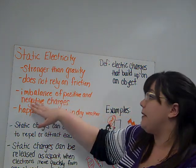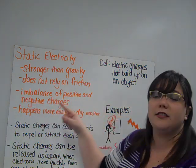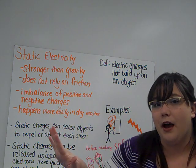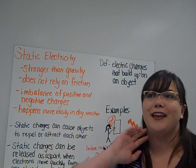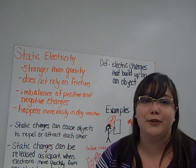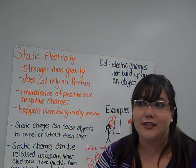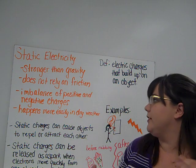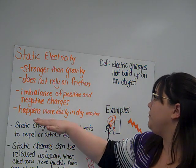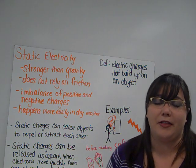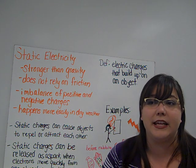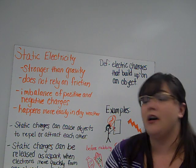Static electricity happens because of an imbalance of positive and negative charges — just like we saw, the hand had lots of positives and the balloon had lots of negatives. It was an imbalanced charge. It also happens more easily in dry weather. Without the presence of water in the air, without the humidity, static electricity happens a lot more easily.